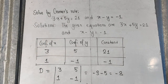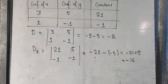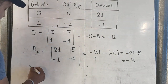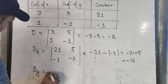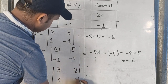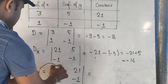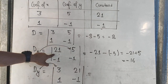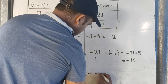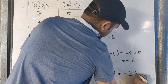Now we find Dy. To find Dy, we write the coefficient of x first and the constant term in the second column. The matrix becomes 3, 21, 1, minus 1. So 3 into minus 1 is minus 3, minus 21 into 1 is 21. This gives Dy equals minus 24.